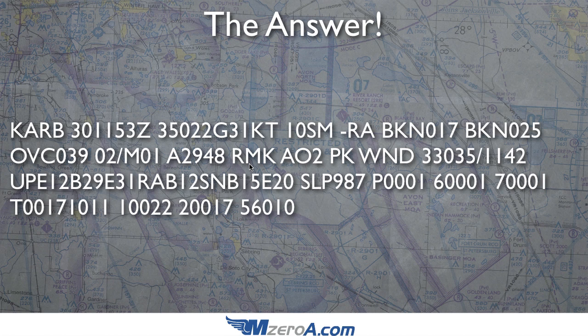Getting into the remarks section now. RMK simply means remarks. AO2 is something you need to know. It could either say AO2 or AO1. AO2 means they do have an automatic precipitation discriminator at that field. All that means is it can tell you: yes, it's raining, snowing, sleeting, hailing, or freezing rain. Whereas an AO1 does not have an automatic precipitation discriminator — it can only say there's something falling from the sky; it doesn't know what it is.